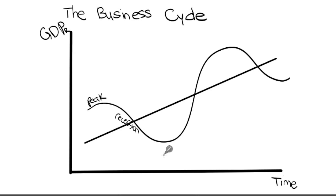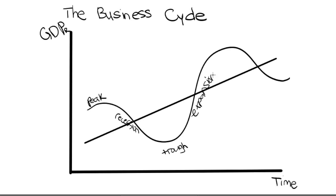And this is our trough. Up here, as we're moving upwards towards the next peak, this is expansion. This is our peak, and moving downward, this is recession.